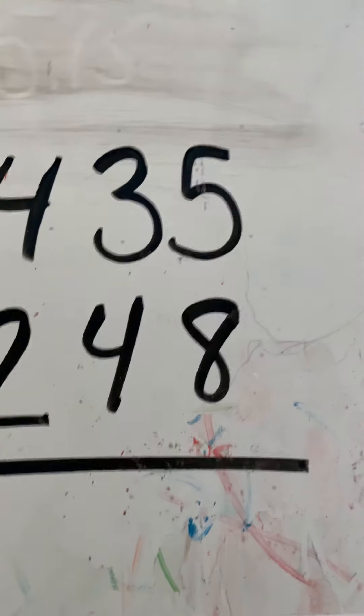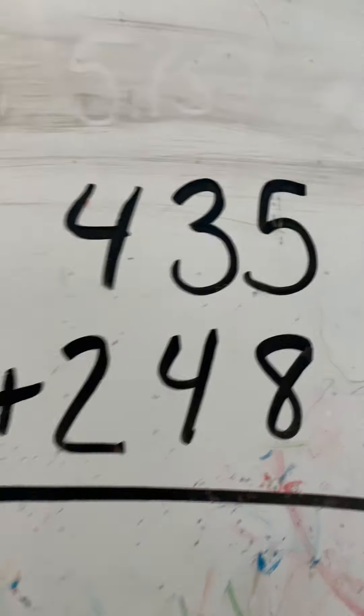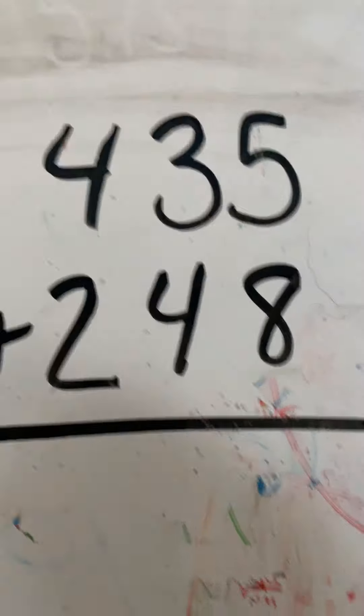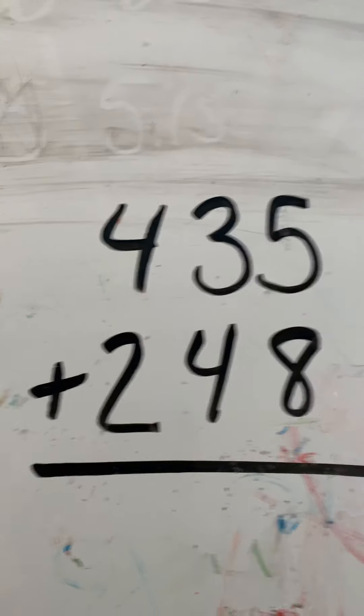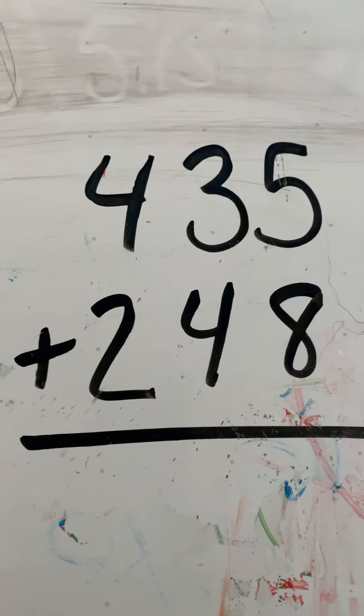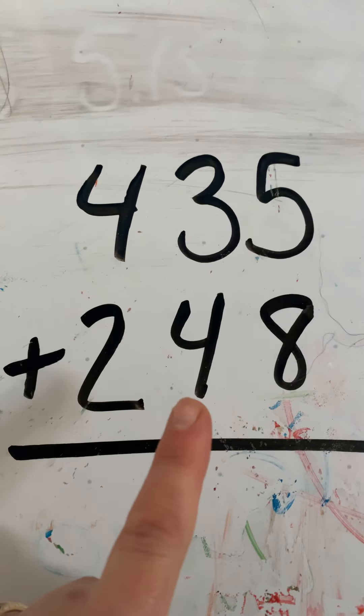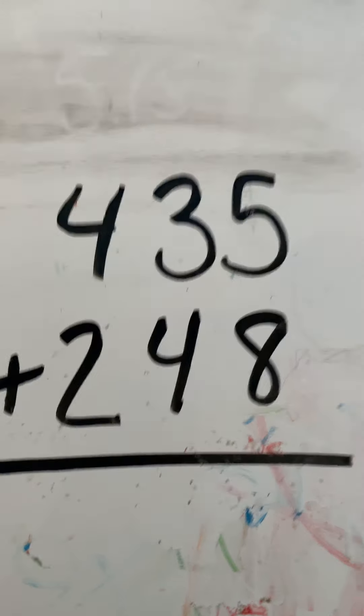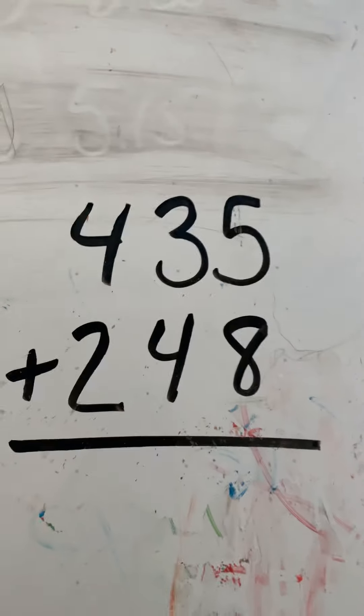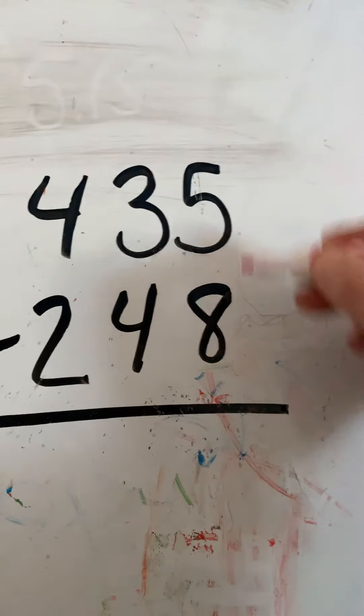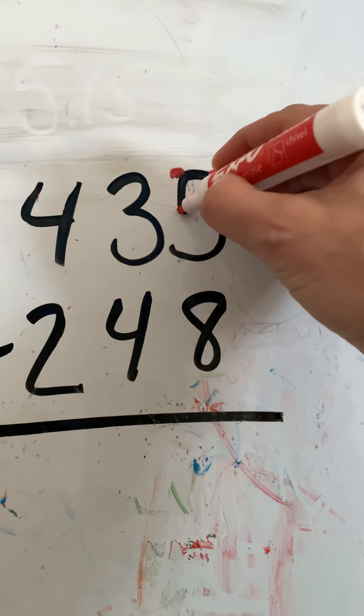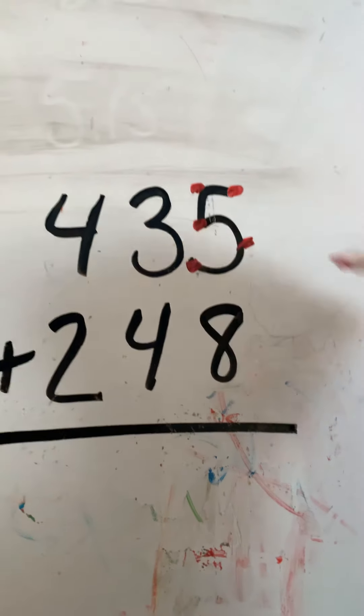Okay, let's do one more with Mrs. Masco. One more. You can do it. You're so smart. I'm not going to use the lines to divide for this one. So our problem says 435 plus 248. What side do we start on? Right is always right. So 8, 9, 10, 11, 12, 13.